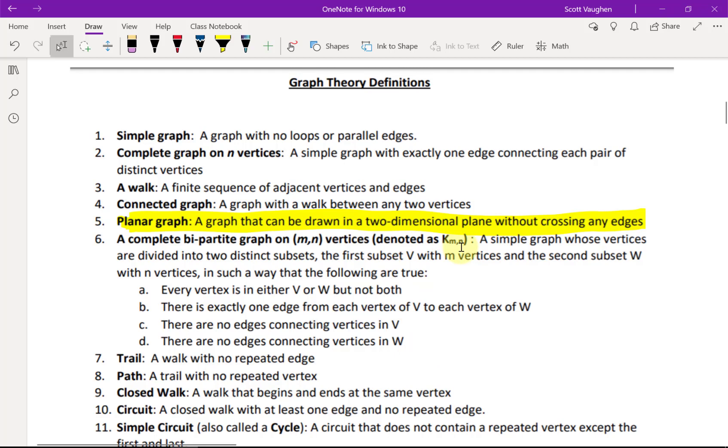What we're talking about is a complete bipartite graph on MN vertices, which we could denote as K sub MN. In this case, M and N are both three. A complete bipartite graph on MN vertices is a simple graph, that is, a graph with no loops or parallel edges, whose vertices are divided into two distinct subsets. The first set V with M vertices and the second subset W with N vertices in such a way that the following are true. Every vertex is either in V or in W, but not both. There's exactly one edge from each vertex of V to each vertex of W. There are no edges connecting the vertices in V, and there are no edges connecting the vertices in W.